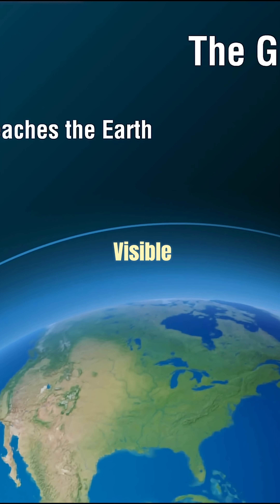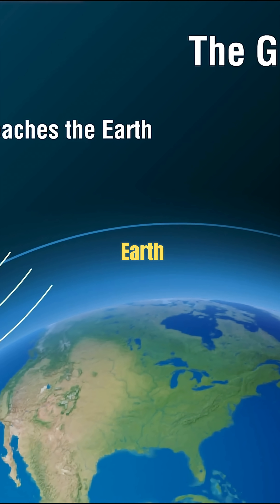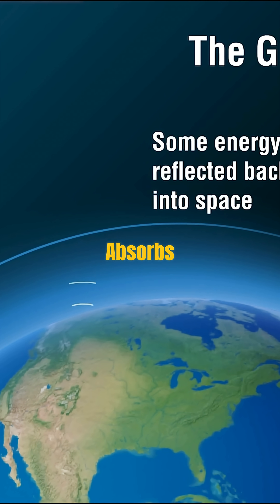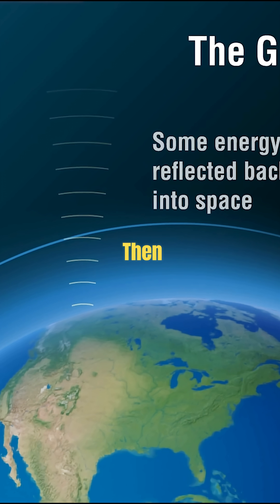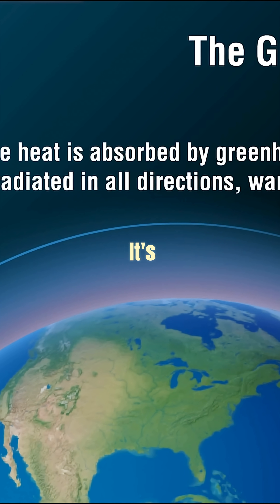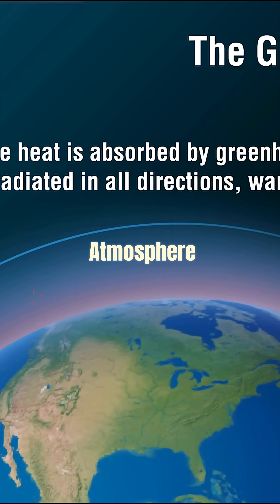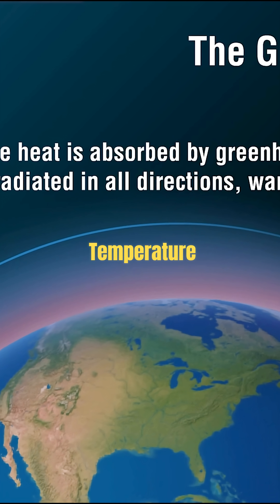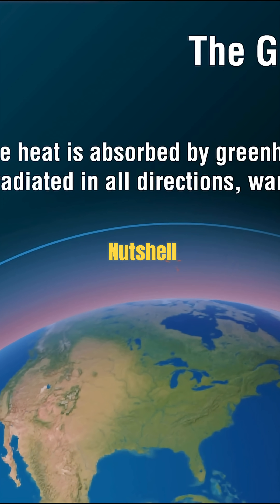The greenhouse effect is where visible light hits Earth's surface. Earth's surface absorbs it and then re-radiates it in the infrared. And it's that infrared that gets trapped in the atmosphere, raising the temperature. That's the greenhouse effect in a nutshell.